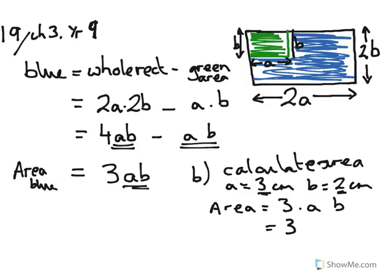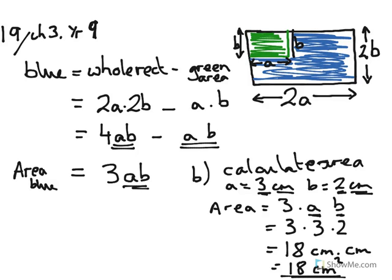So insert these values here, wherever you see a you write 3, wherever you see b you write 2. The area is going to be 3 times 3, which is 9 times 2, which is 18. What are the units going to be? Well, a is the units of centimetres, and b is the unit of centimetres. So you're going to have centimetres multiplied by centimetres, which is 18 centimetres squared. So the area of this blue shaded area in a rectangle where a equals 3 centimetres and b equals 2 centimetres is going to be 18 centimetres squared.